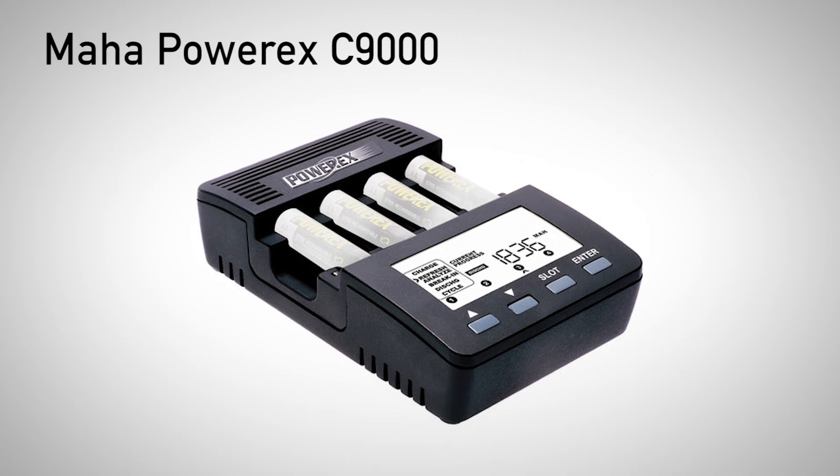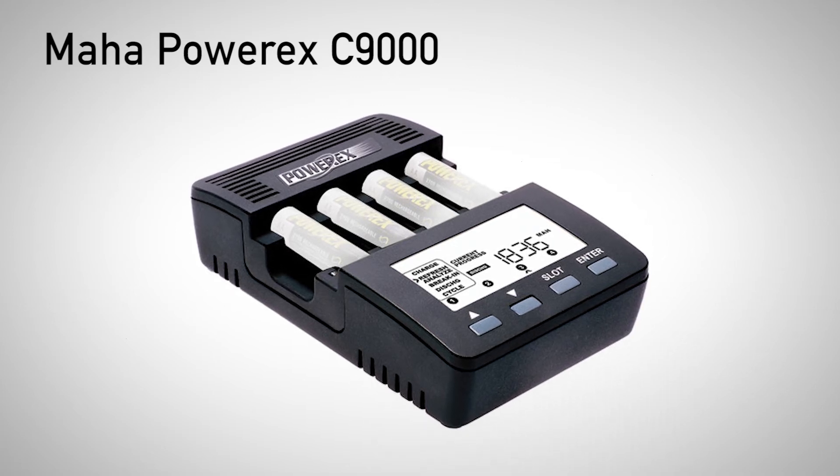If you're a battery geek like some of us, you might like the Maha C9000 charger. That only charges four batteries at a time, but it has an LCD display to test and track the performance of your batteries. It will tell you exactly how much capacity each battery has and allow you to fine tune things like charging rate.